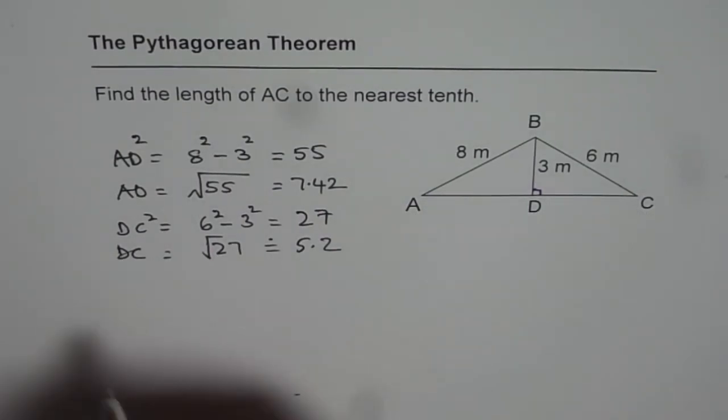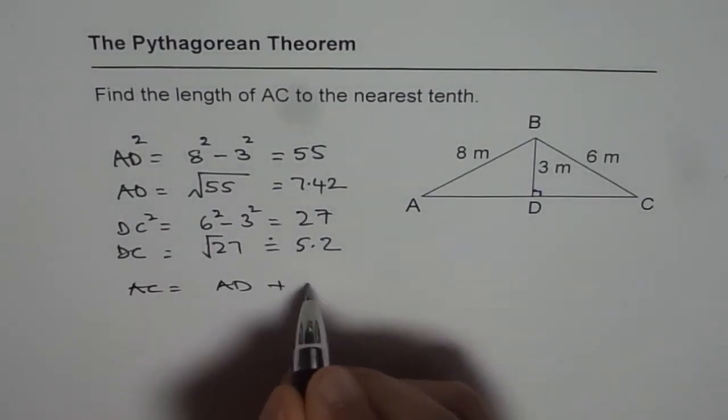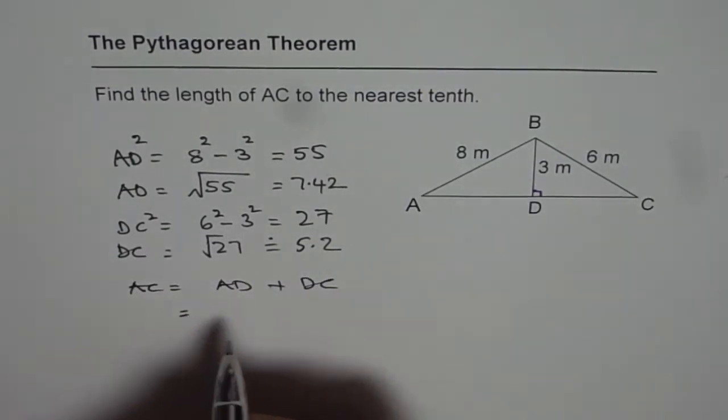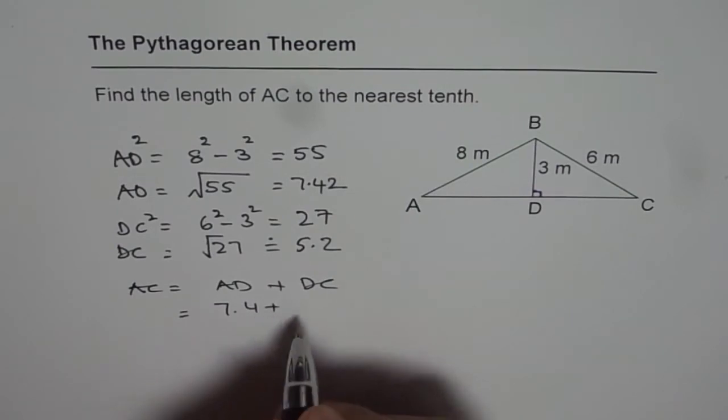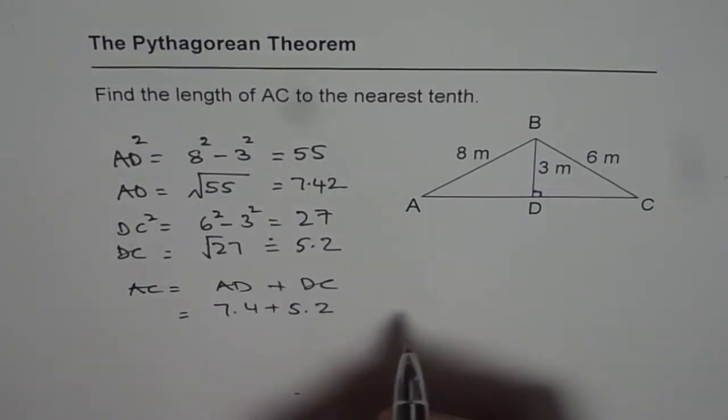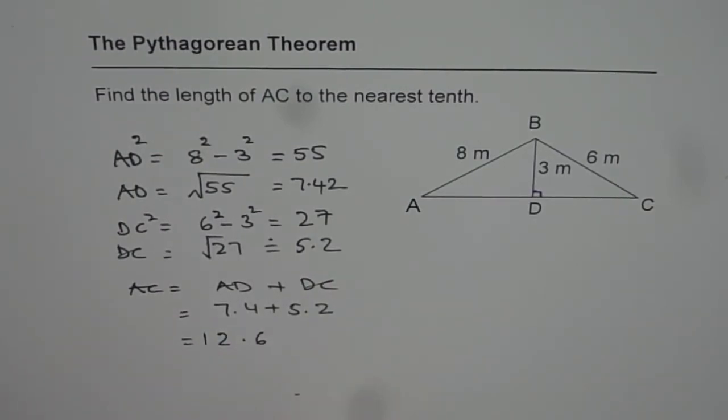Now AC is the combination of AD and DC. So it is equal to 7.4 plus 5.2. And that gives us 12.6. The units are meters.